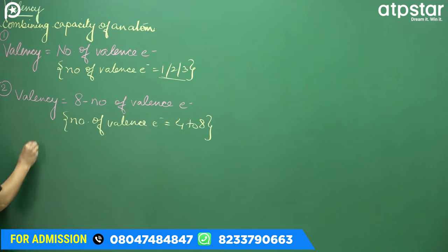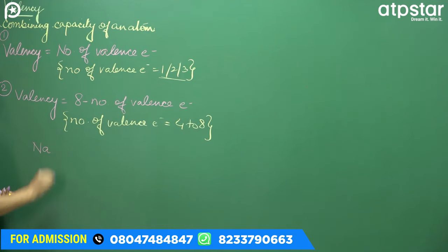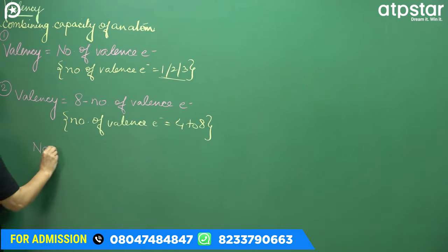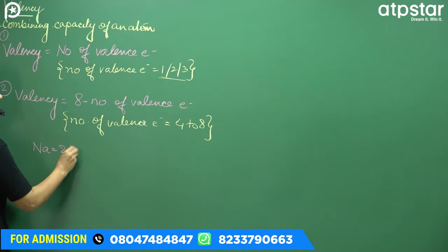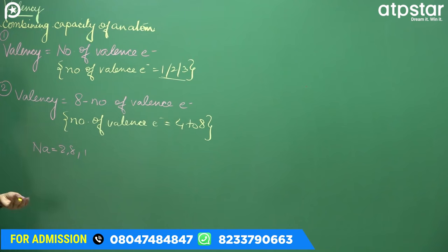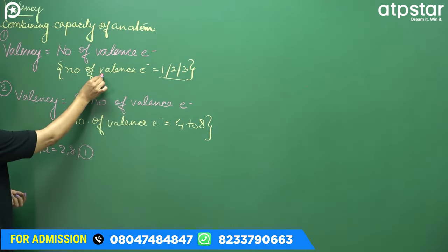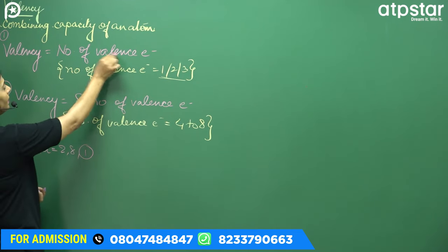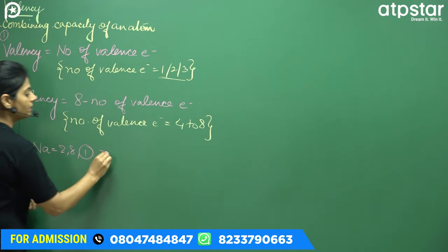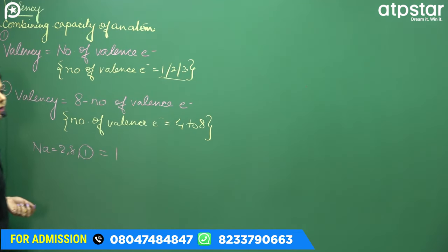Let's start with an example. Sodium — what is the configuration? Simple configuration: 2, 8, 1. The outermost shell is the 3rd shell with 1 valence electron. Since the number of valence electrons is 1, valency equals 1.